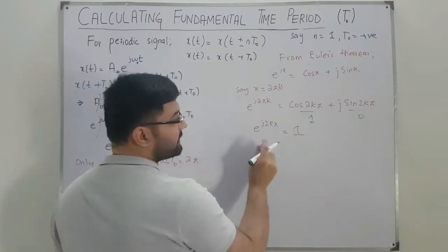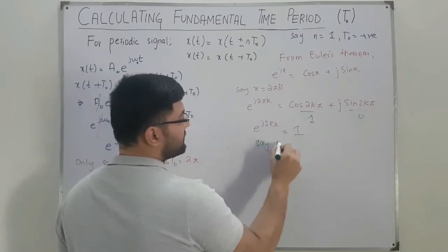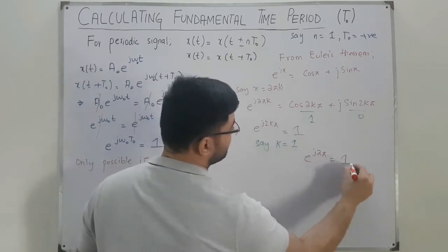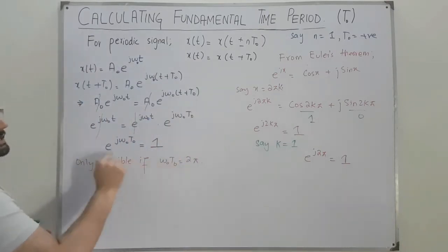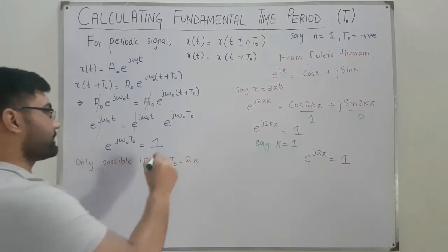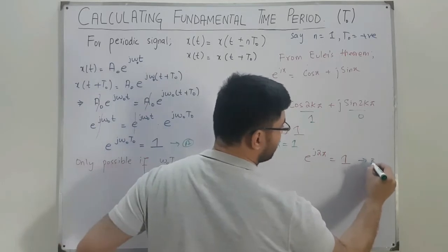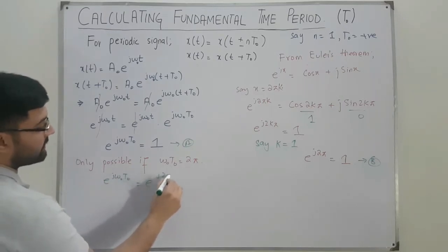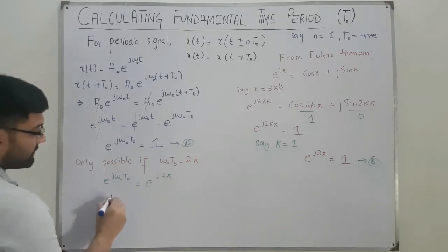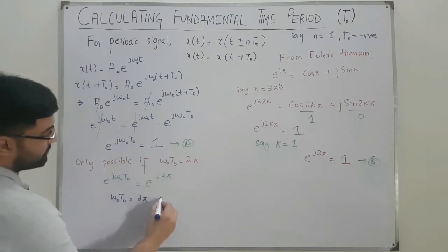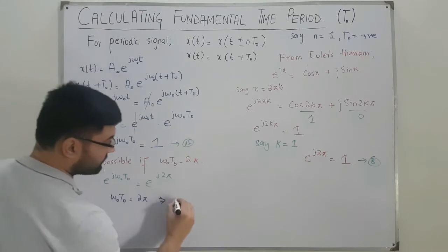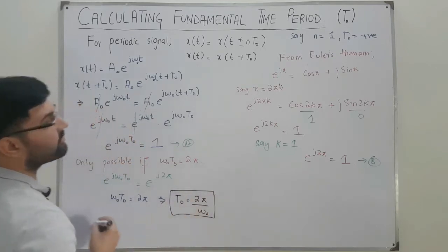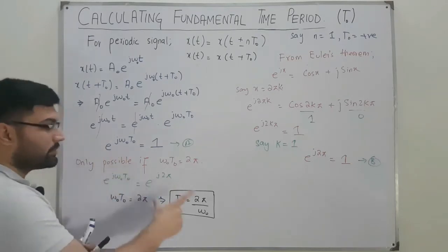For the fundamental period, with k = 1, we have e^(j2π) = 1. Equating e^(jω₀T₀) = e^(j2π) and comparing exponents gives ω₀T₀ = 2π. Therefore, the formula for the fundamental time period is T₀ = 2π / ω₀.